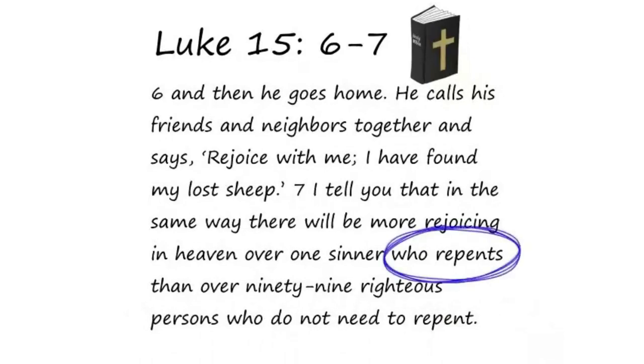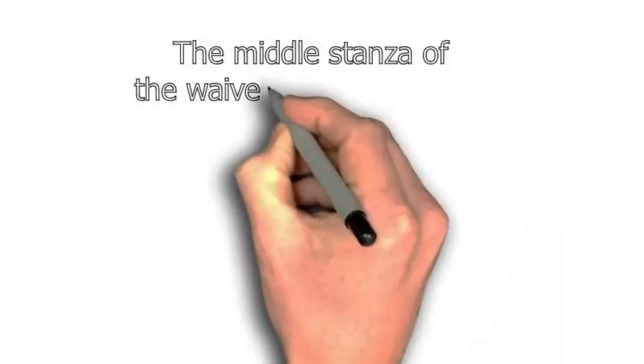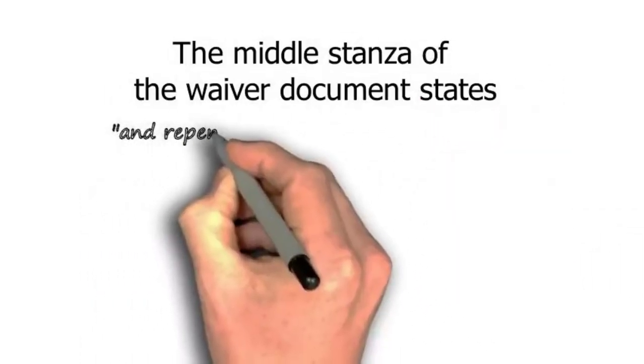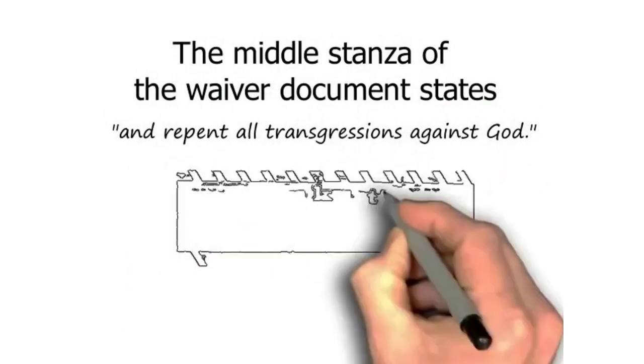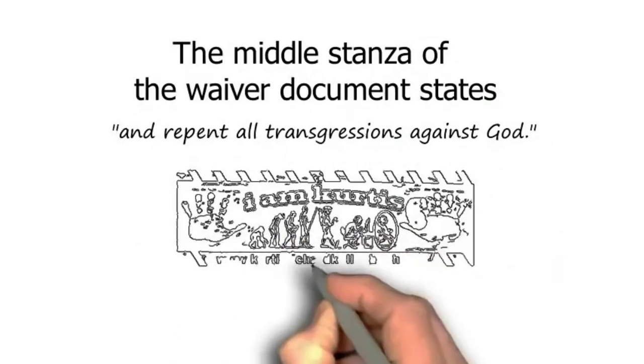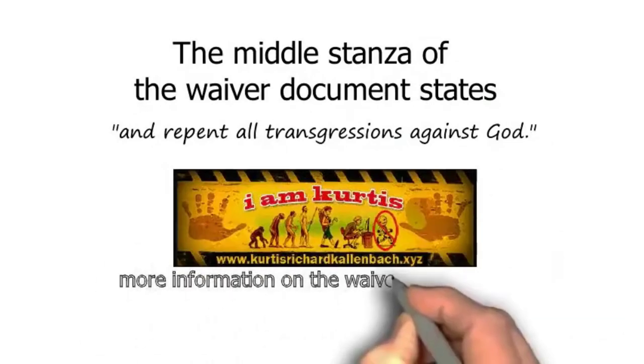I'm doing this because I'm trying to get back to the concept of the waiver as well. The middle stanza of the waiver says 'and repent all transgressions against God.' So again, it's funny that the parable of the lost sheep is back to the concept of you.